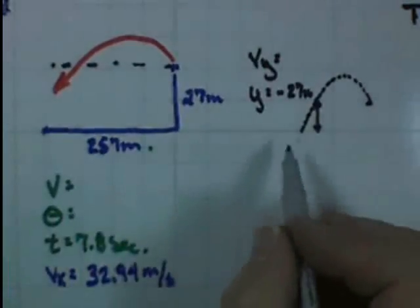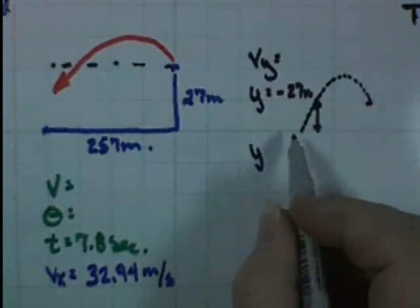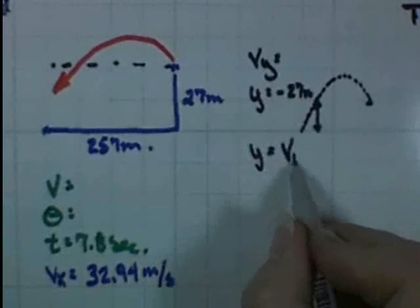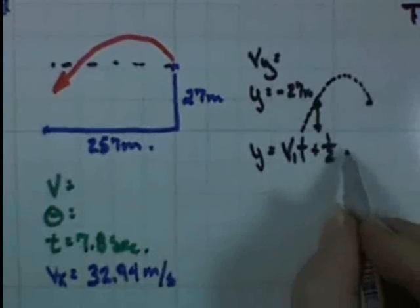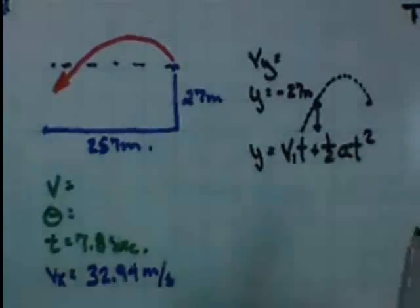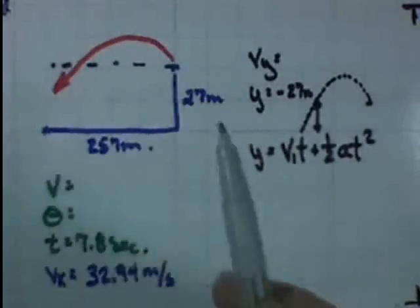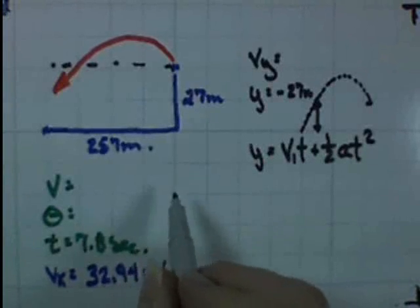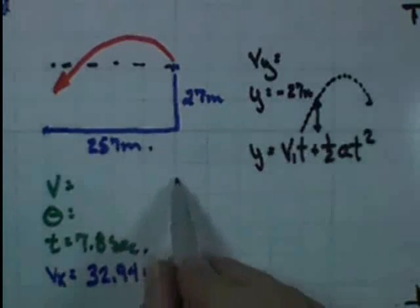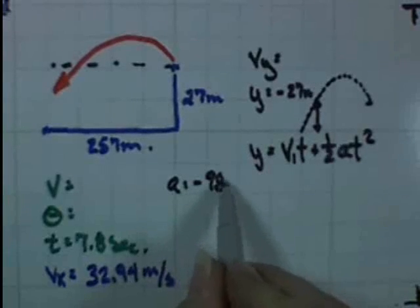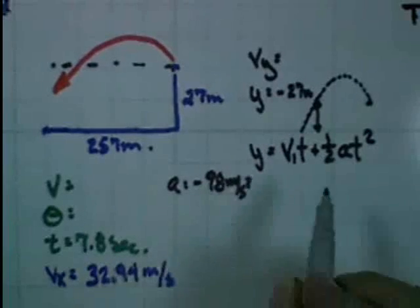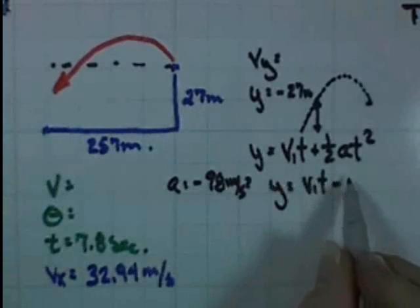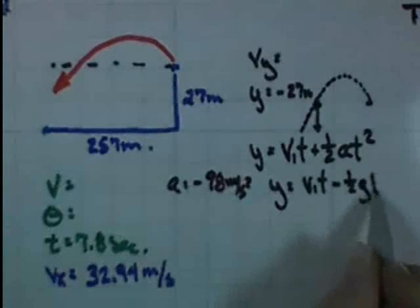We know that the distance traveled under the influence of acceleration is equal to velocity-initial times time plus one-half at squared. In the case of a ball on this planet, acceleration becomes negative g — negative 9.8 meters per second squared. So we can write this equation as: distance equals v_i·t minus one-half·g·t².